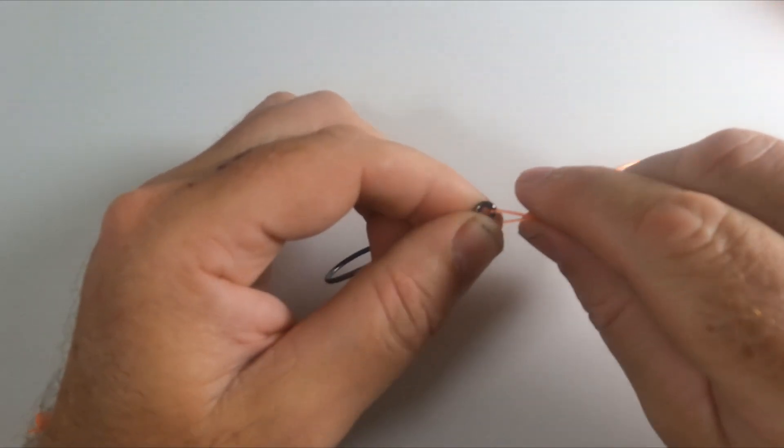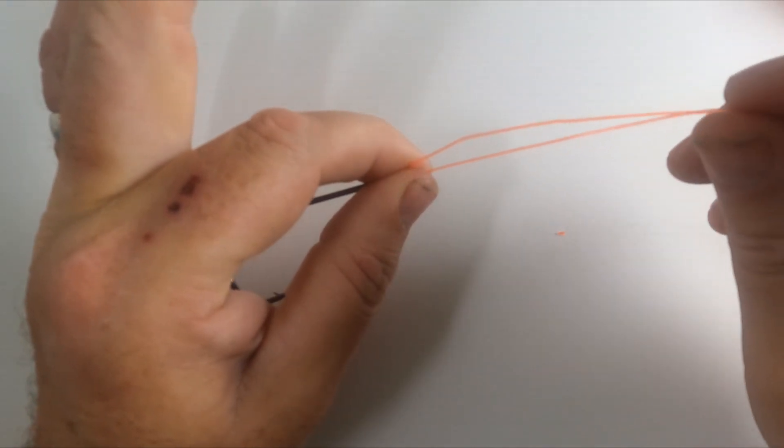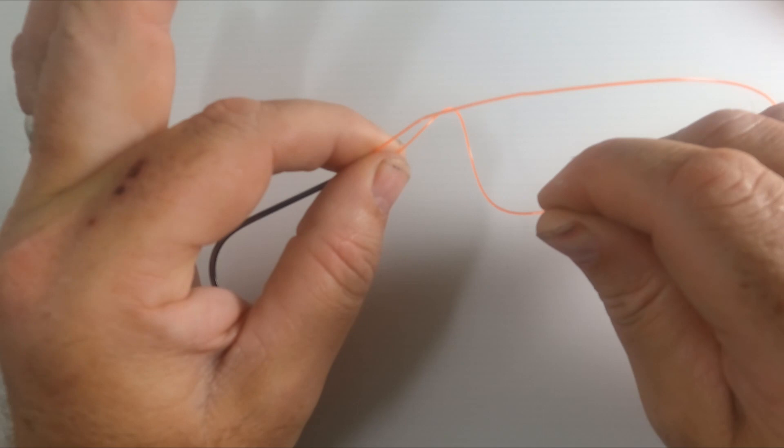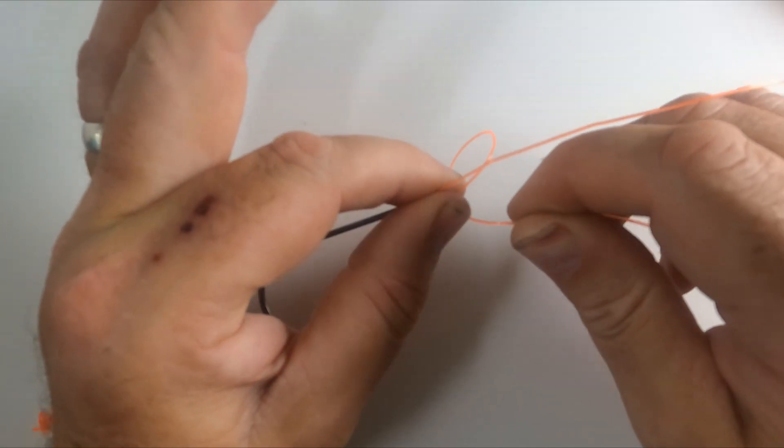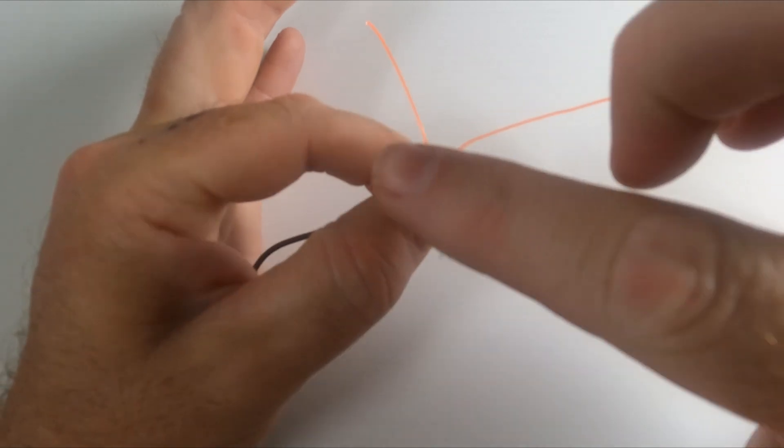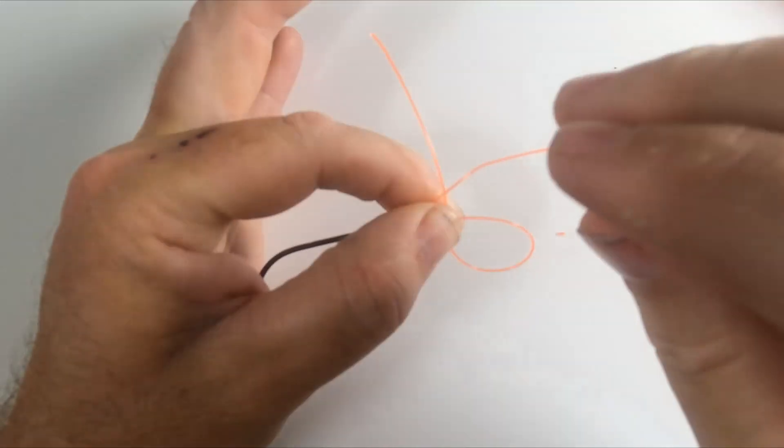So we're going to pinch the line in our left hand like that, and then we're going to bring our tag end back round to our left thumb and finger and form a small loop like so. And then we're going to take this tag end over the top and then through that loop, so essentially we're binding the two lines together.